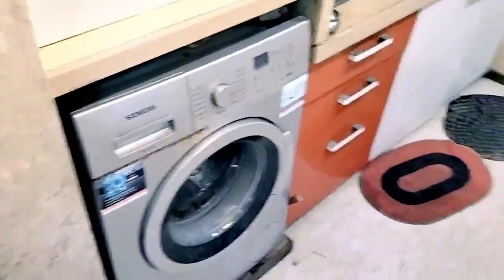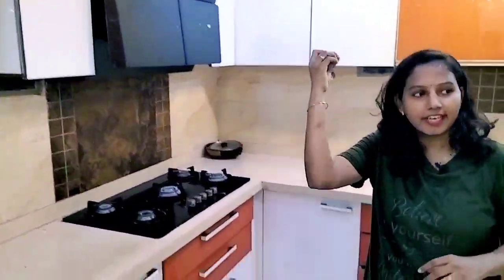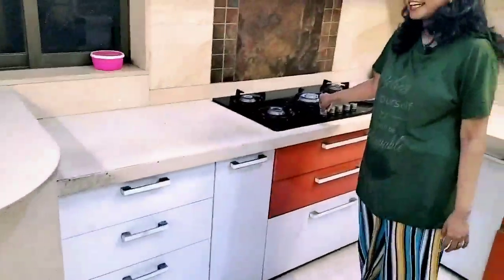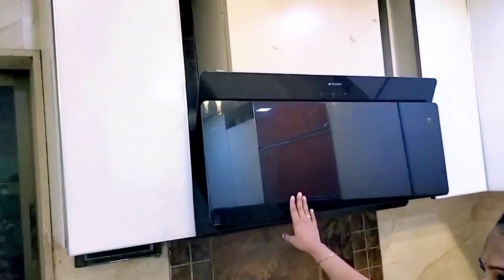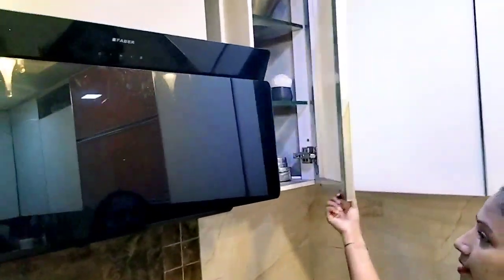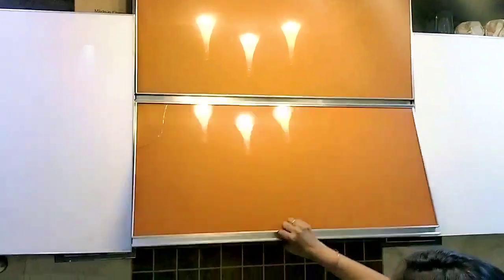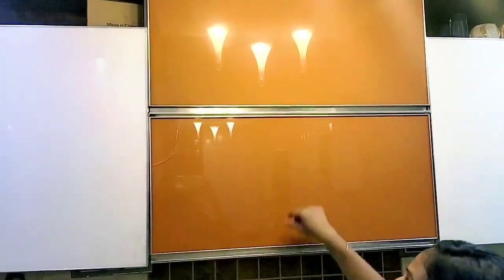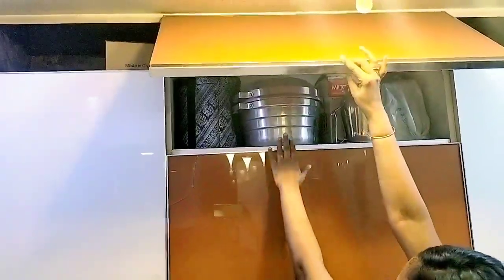It's a small kitchen. This is our existing modular kitchen. There is a chimney and everything in the cabinet. The cabinet is covered. The kitchen is an older kitchen here.